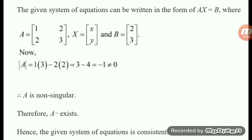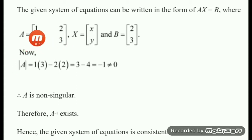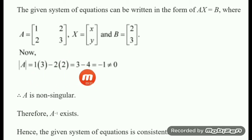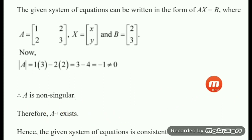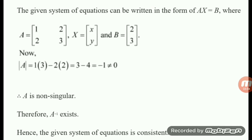Expanding the determinant: 1 into 3 minus 2 into 2 equals 3 minus 4 equals minus 1. Since it is not equal to zero, A is non-singular, therefore A inverse exists. Since the determinant of A is not equal to zero, the given system is consistent and has a unique solution.